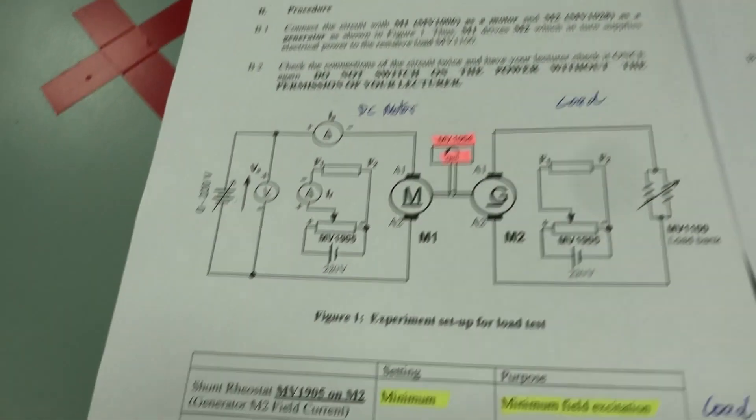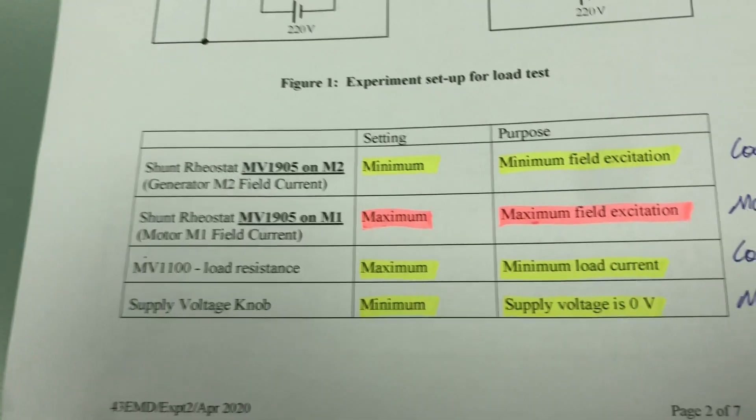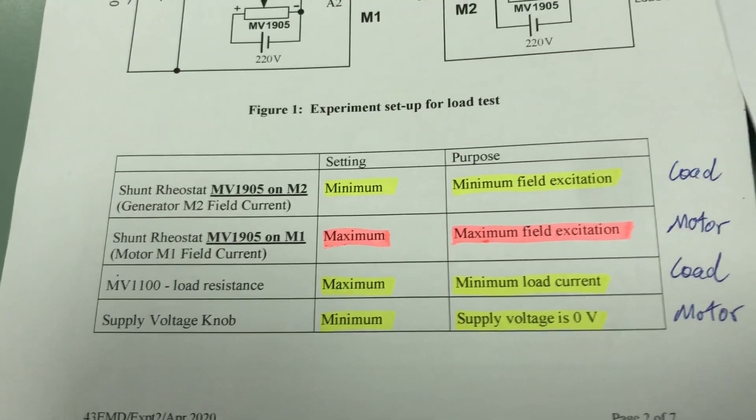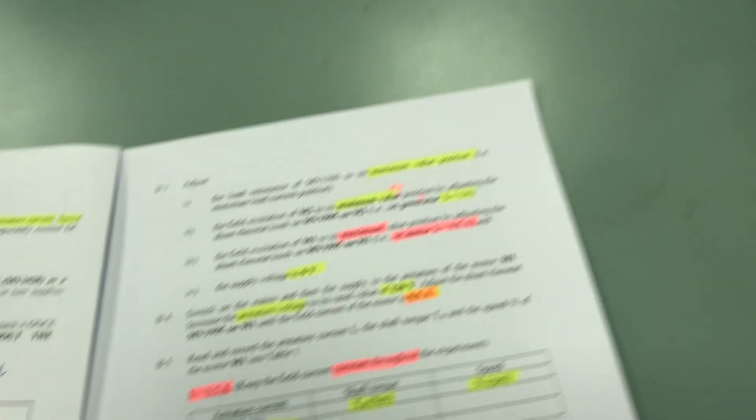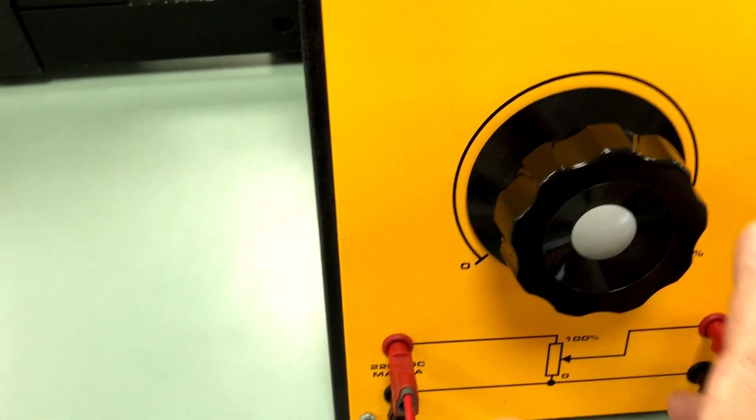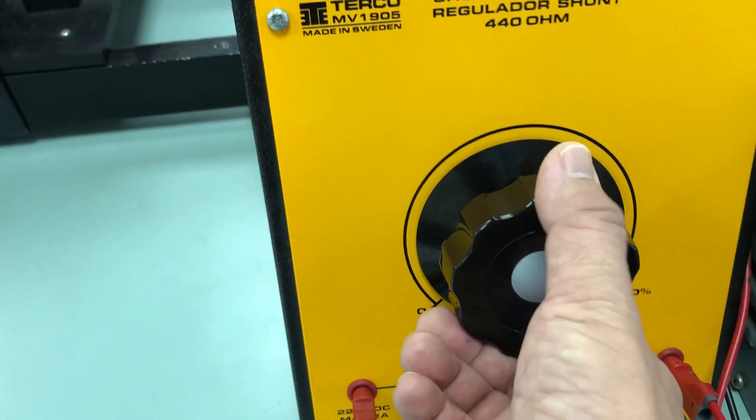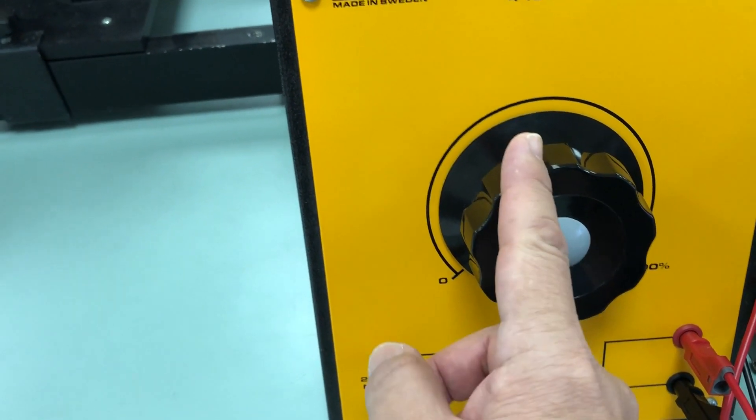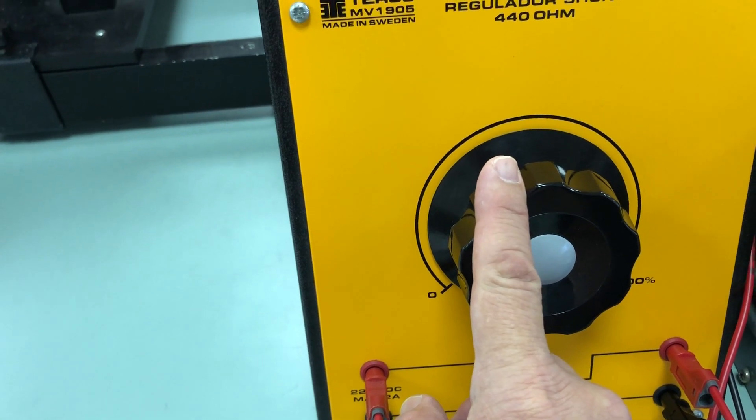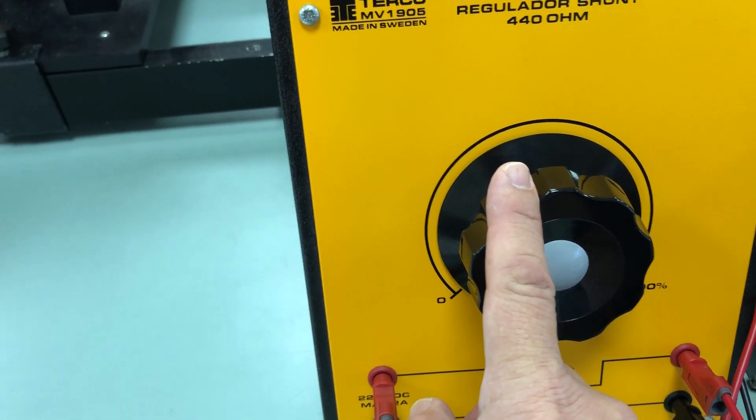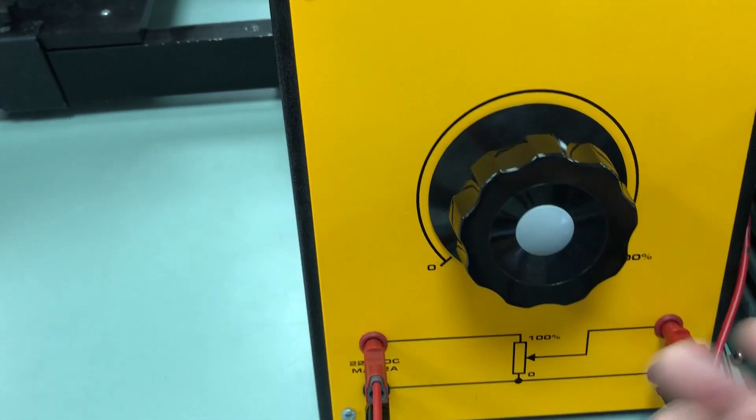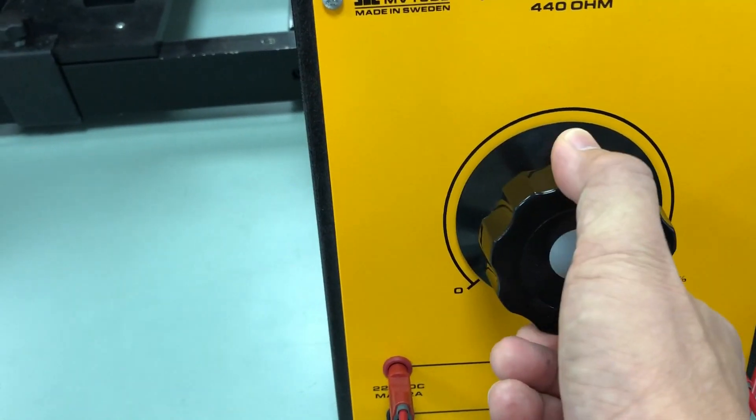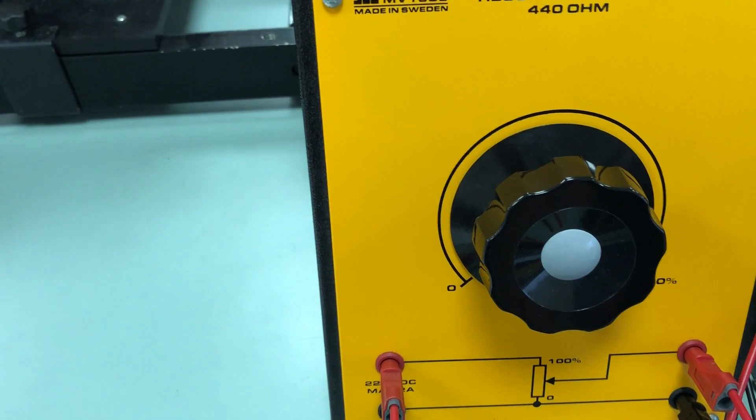Make sure also like experiment 1, the motor rheostat is at maximum. The field current must be set at the main so that you don't have too low a field current and the speed will go up very high. So we set the rheostat to maximum to limit the field current.